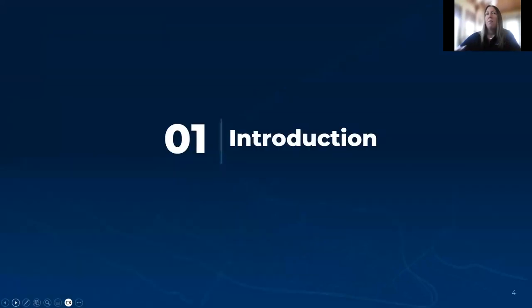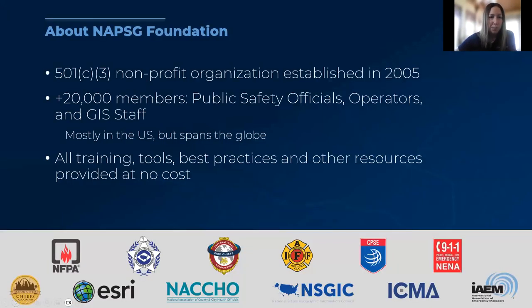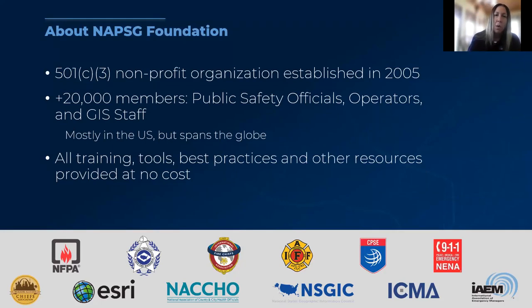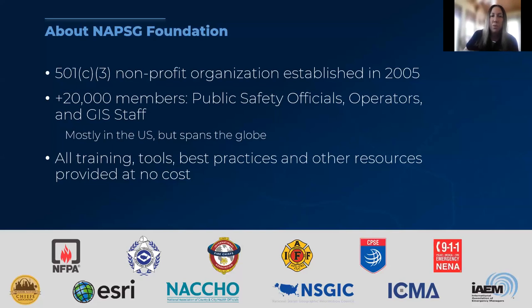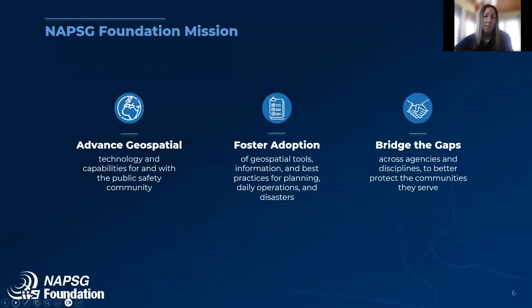I want to talk about NAPSIC — who we are and our goal for hosting sessions like this. For those new to our organization, we are a 501c3 nonprofit with a national network of over 20,000 members — public safety and GIS practitioners alike — representing all levels of government, the private sector, and academia. We were formed almost 20 years ago as an alliance between a number of prominent national associations, and we've evolved into a formal organization. Our mission is to improve the safety, resilience, and well-being of our communities, and to improve government and non-governmental organization responses to chronic and emergent public safety threats.